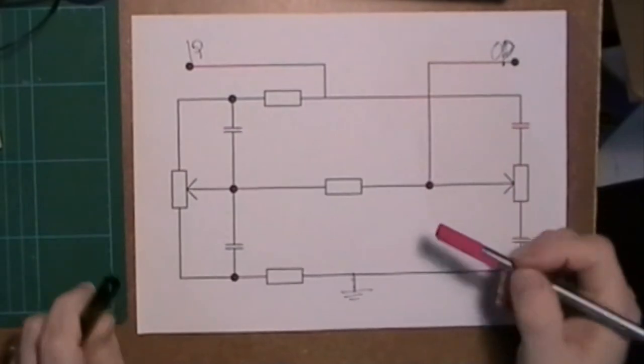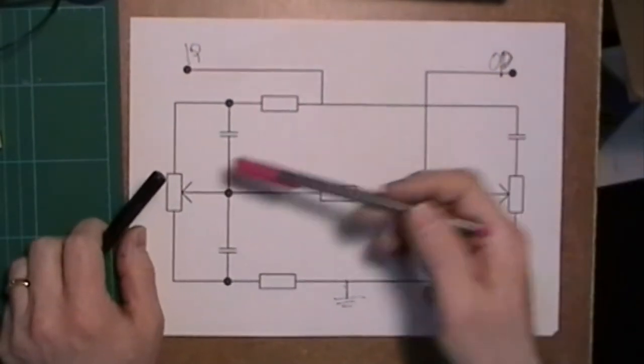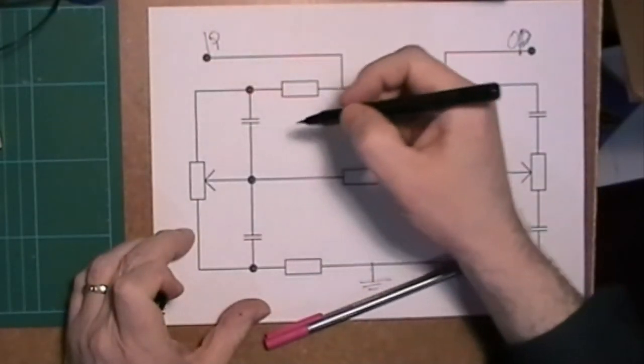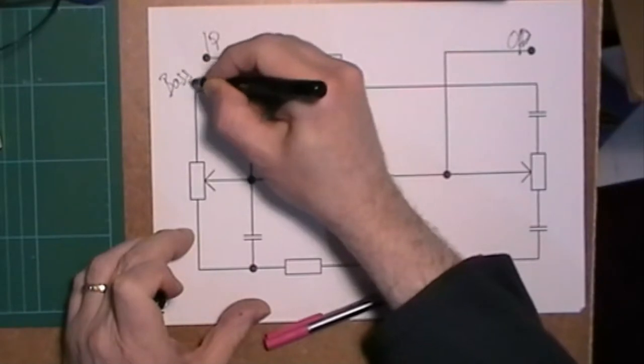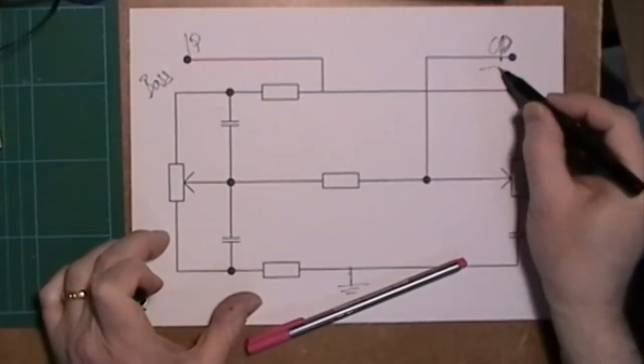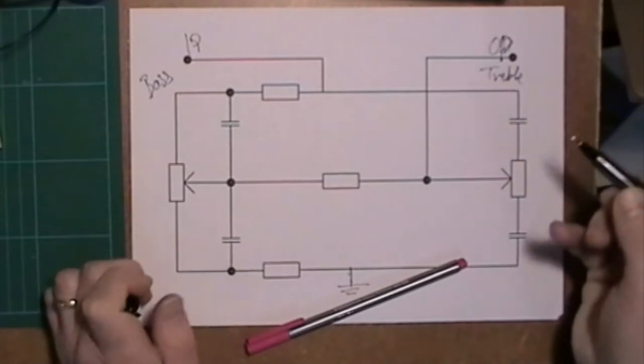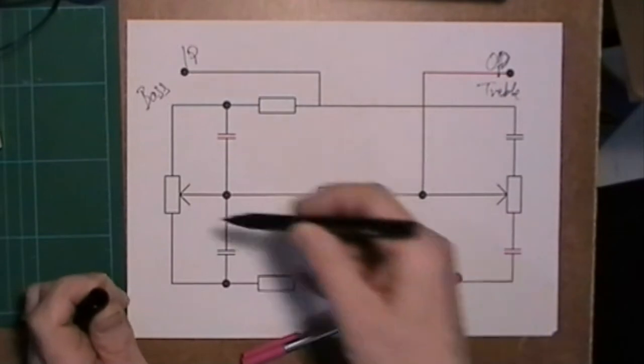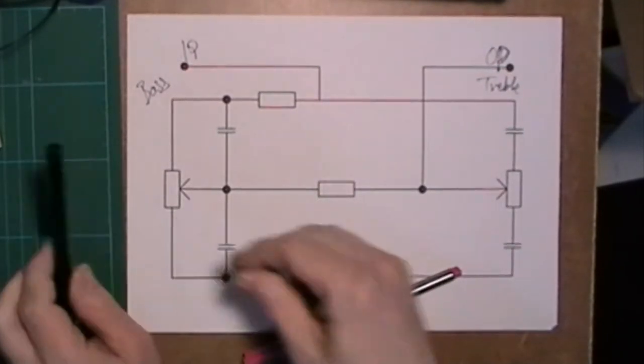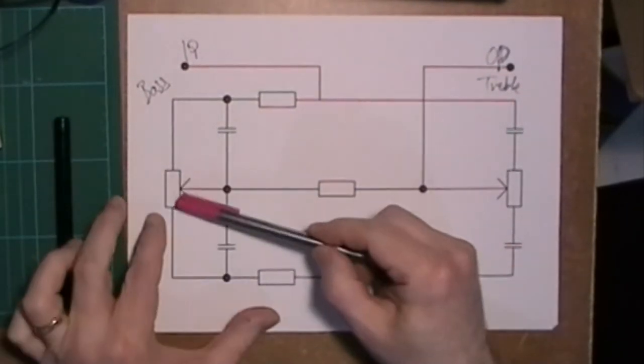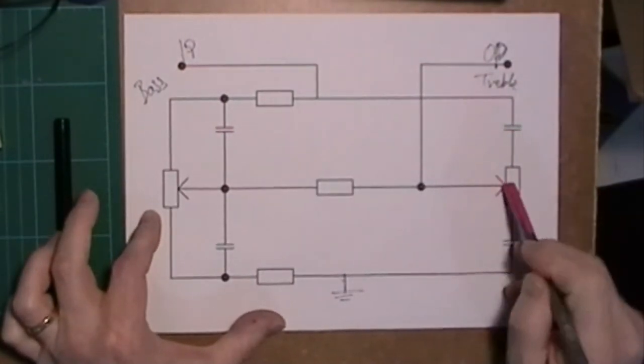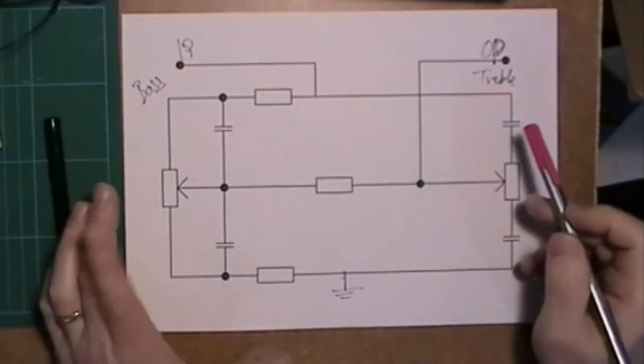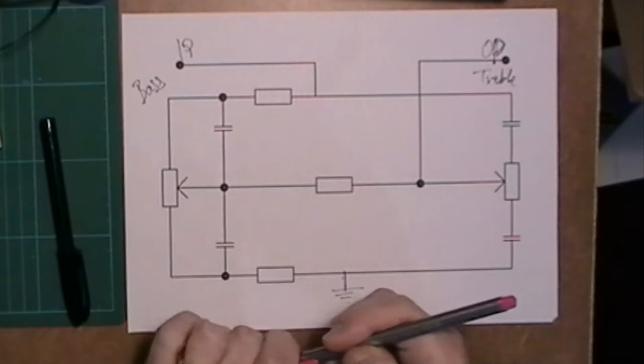So the basics of it is that this pot is the bass side and this over here is the treble. Nice and simple. This pot will cut or boost the bass side on the bass frequencies and this side will cut or boost the treble or the higher frequencies, sort of mid to high frequencies.